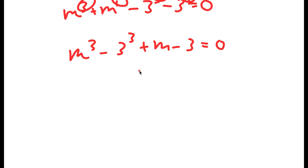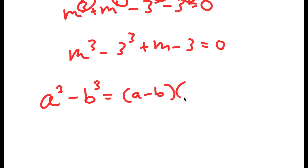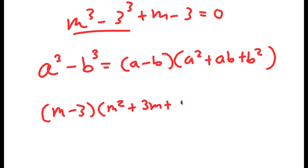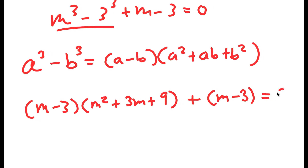Now I'm going to be using an exponential property. This property states that if I have something in the form a to the power of 3 minus b to the power of 3, this is equal to a minus b times a squared plus ab plus b squared. So m to the power of 3 minus 3 to the power of 3 turns into m minus 3 times m squared plus 3m plus 9, and I have this plus m minus 3 is equal to 0.